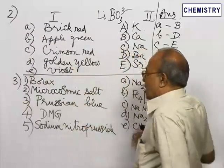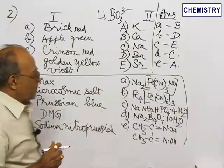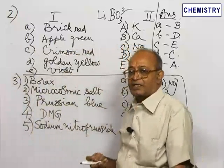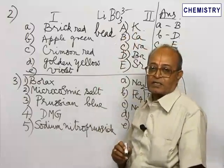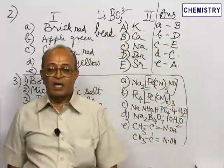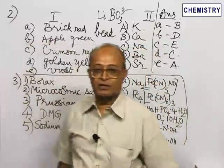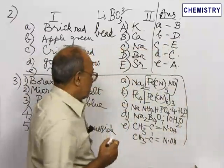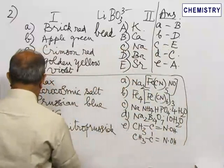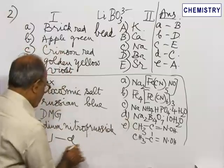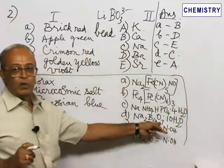Now let us consider question number 3. Here again there are certain reagents in the first column and their corresponding formulae in the second column used in qualitative analysis. There is a test known as the borax bead test. Borax should contain boron in it. From column 2, D is the correct option: borax is sodium borate, Na₂B₄O₇·10H₂O.